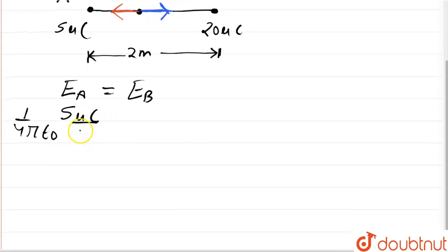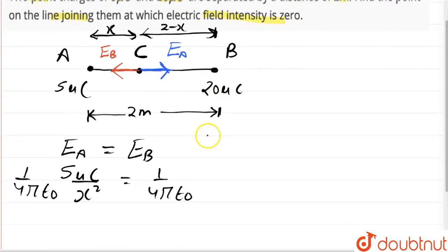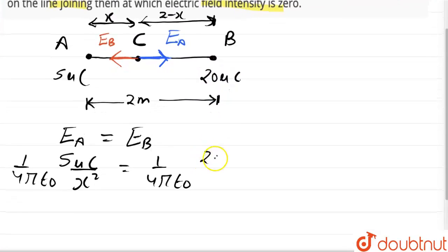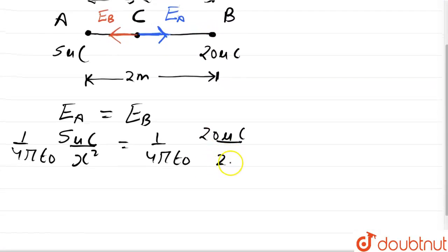So here the distance is x square and EB would be 1 upon 4π epsilon 0. The charge for B is 20 micro coulomb and the distance between C and B is 2 minus x, 2 minus x whole square.